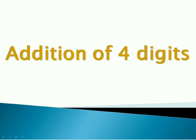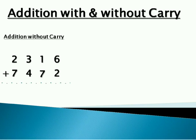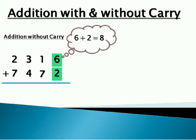So let's start with addition. Addition with carry and without carry. The first example is without carry. The first number is 2316 plus 7472. Let's add the unit digits. That is 6 plus 2, that is 8. 1 plus 7, that is 8. 3 plus 4, that is 7. 2 plus 7, that is 9. So the answer is 9788.